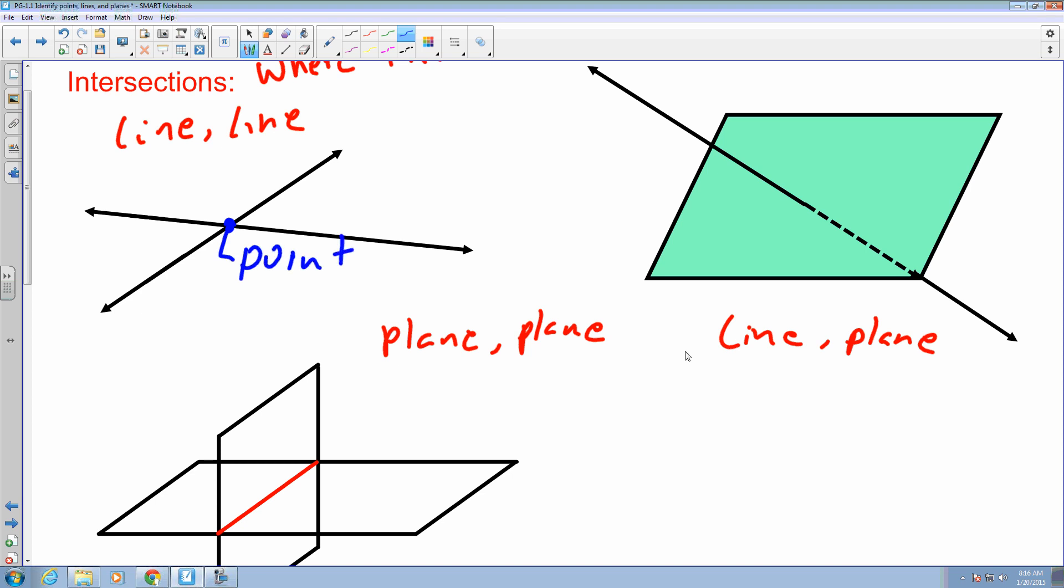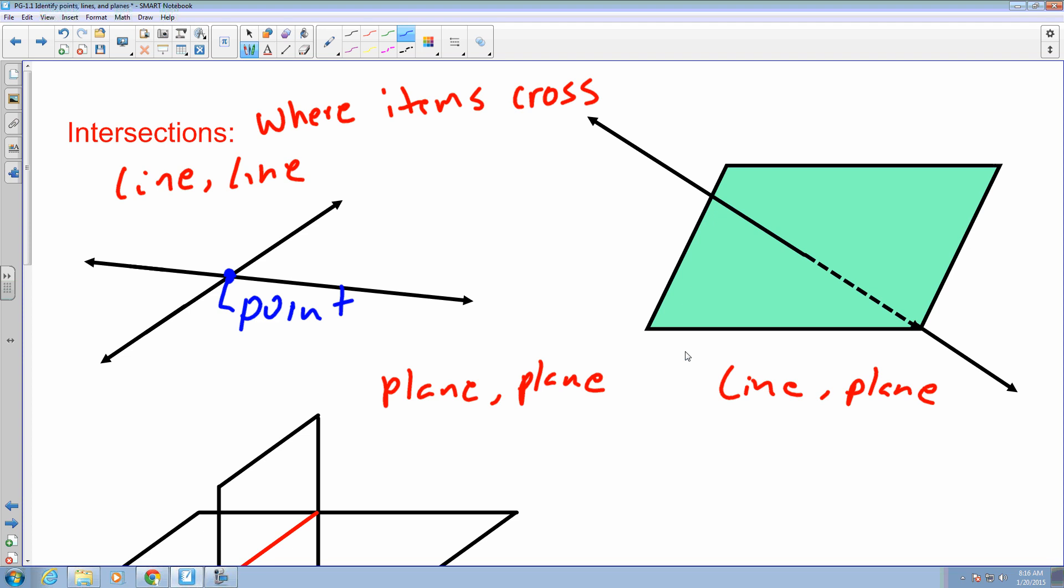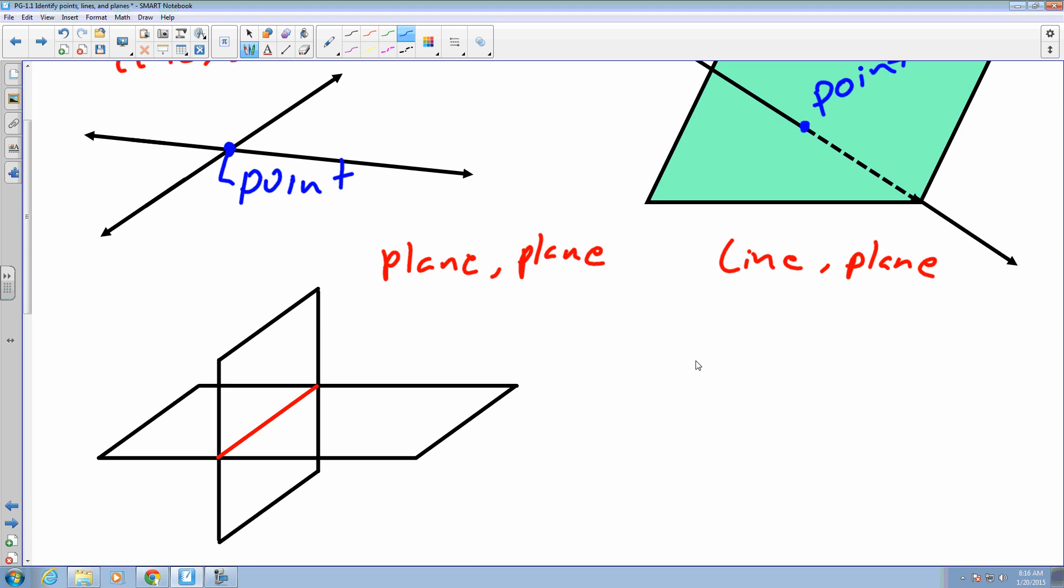When a line to plane intersect, I also get a point. And finally, when two planes intersect, I get a line segment.